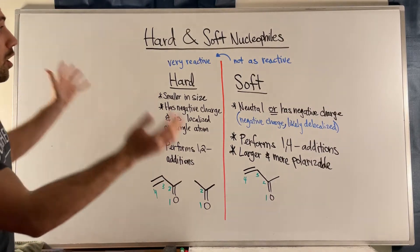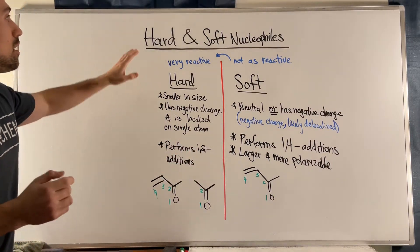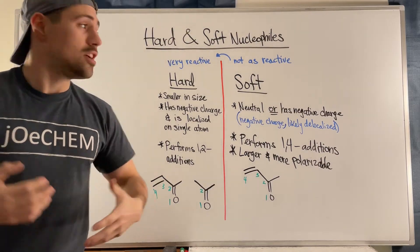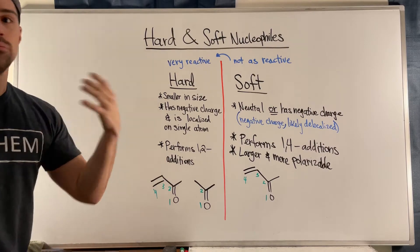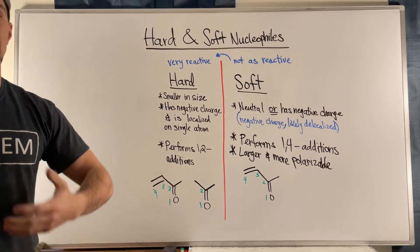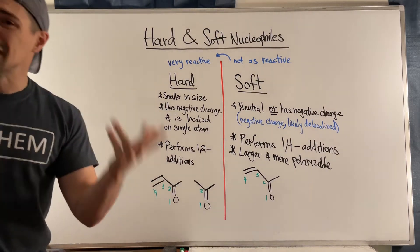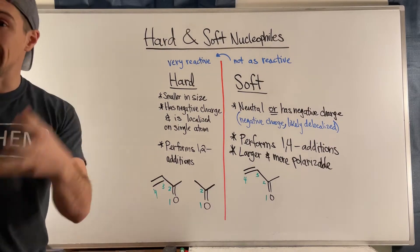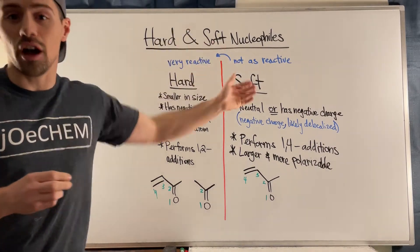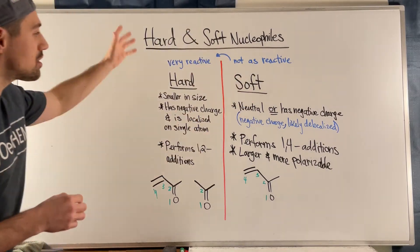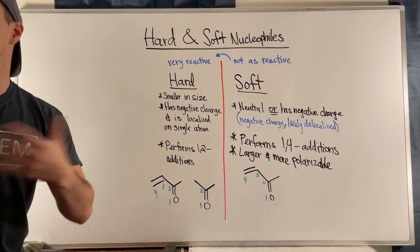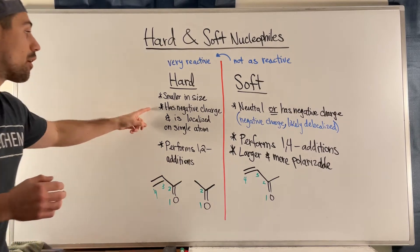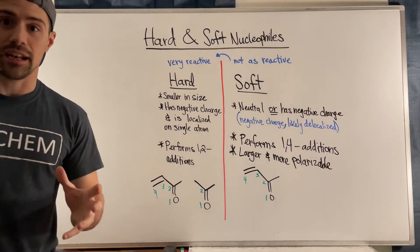So hard and soft nucleophiles — what are they? It's terminology to describe how reactive a nucleophile is. A hard nucleophile is more reactive, more unstable, and is better at attacking things as opposed to a soft nucleophile. Looking at the hard nucleophile, what is typical of one? They're smaller in size and they are very, very negative.